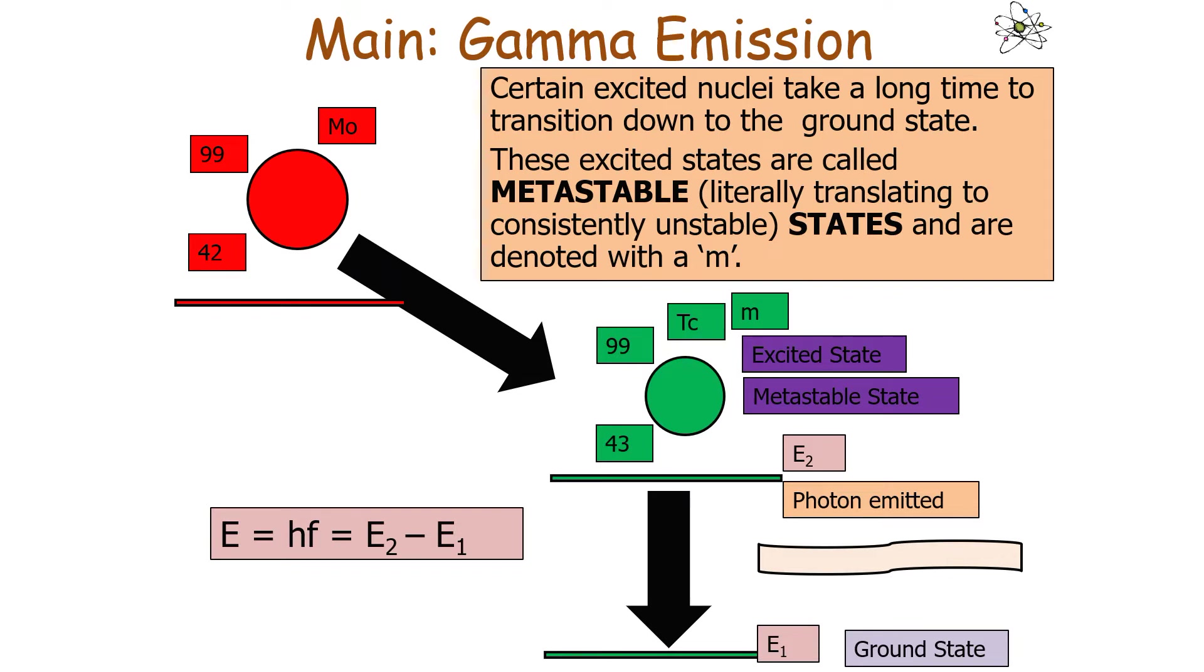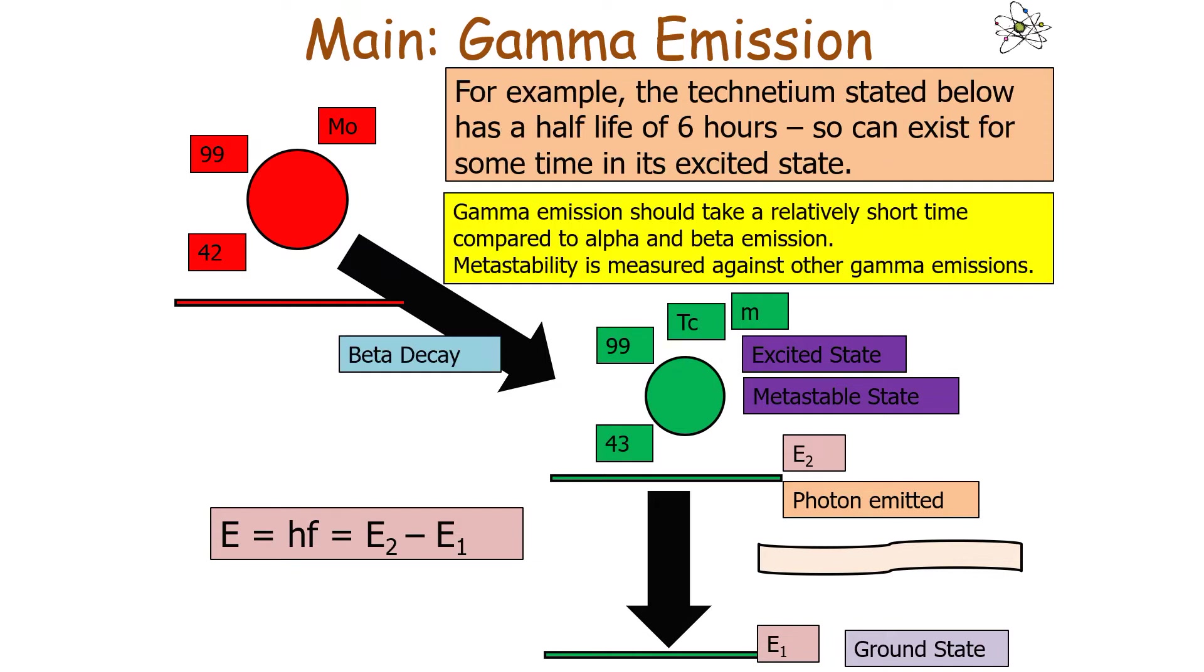Certain nuclei take a long time to transition down to the ground state. These excited states are called metastable states, literally translating into consistently unstable, and are denoted with an M on our energy level diagrams and nuclear decay equations. In this case, the technetium state has a half-life of 6 hours.